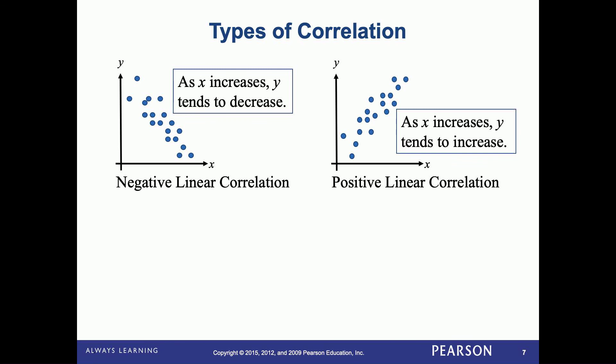If the general trend of the points is going uphill or increasing, you would say the slope is positive. And if the slope was positive, you would have a positive linear correlation.